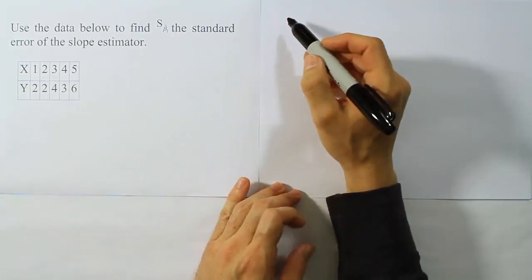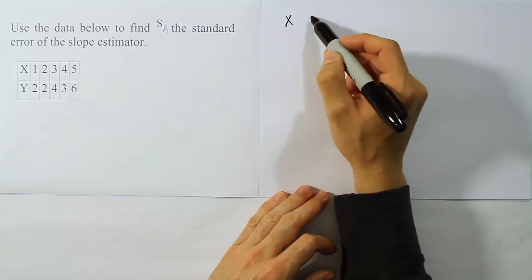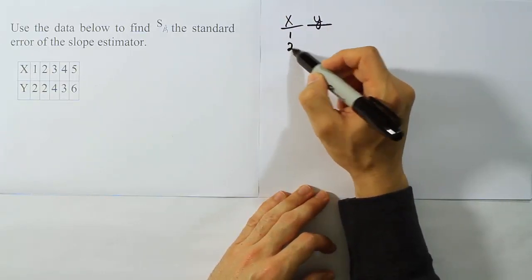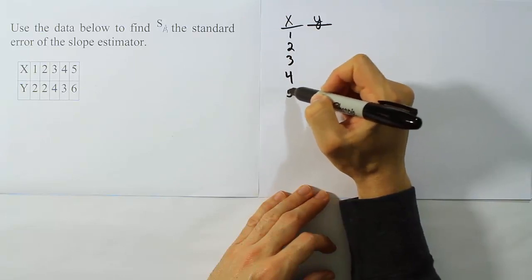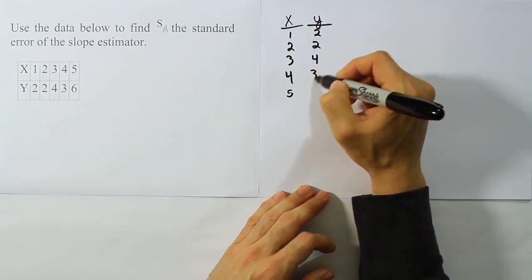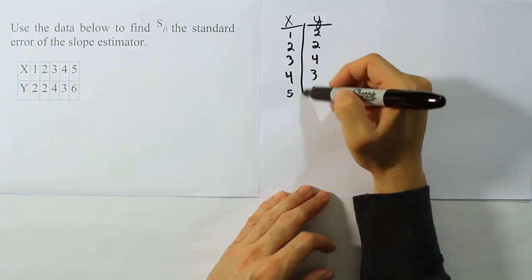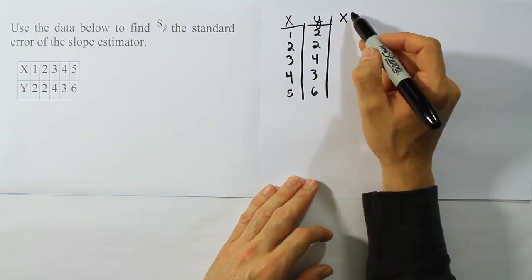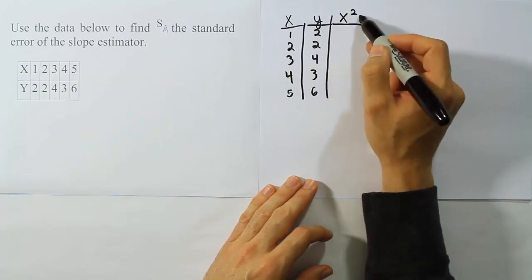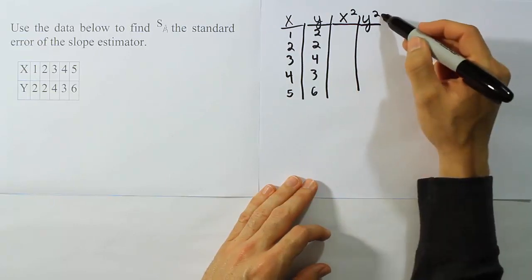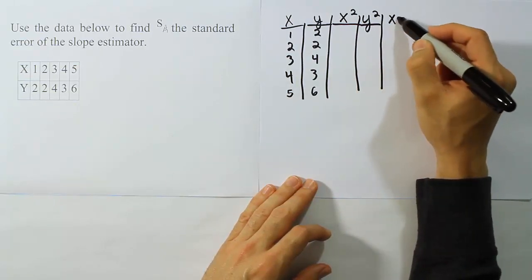So in other words, what we need to do is to get the information that's required to come up with our sum of square values. We need to do 1, 2, 3, 4, 5 for x, 2, 2, 4, 3, 6 for y, and then from there we need to fill in all those other columns that we always need. Like for example, we'll need x squared. We'll also need y squared in the problem, and then we're going to need x times y.